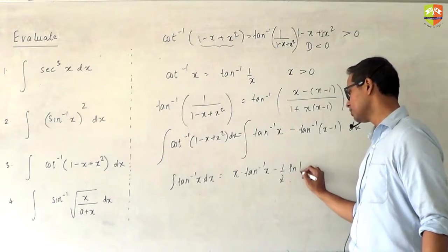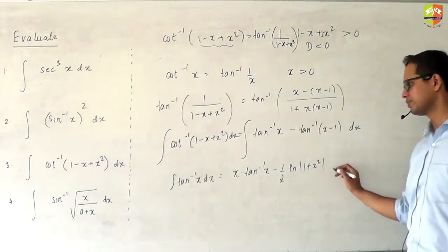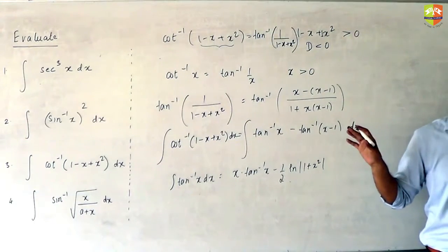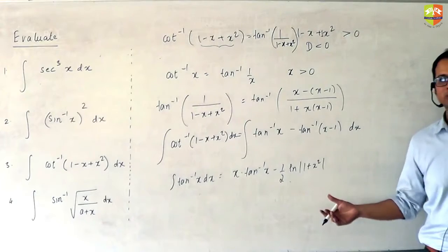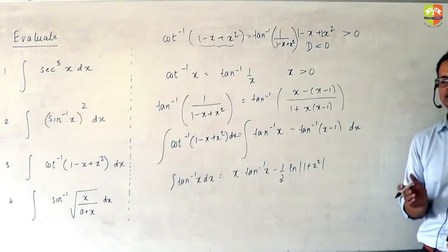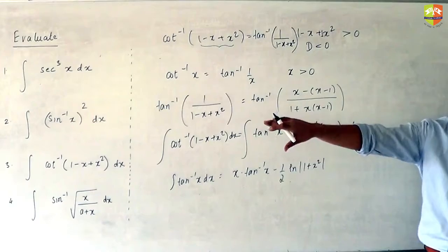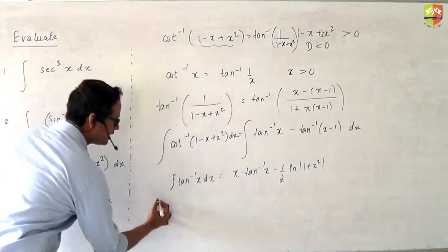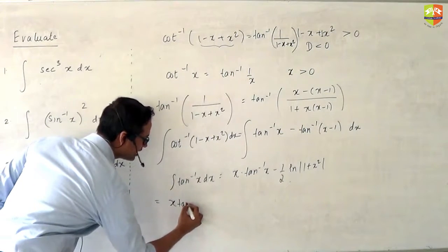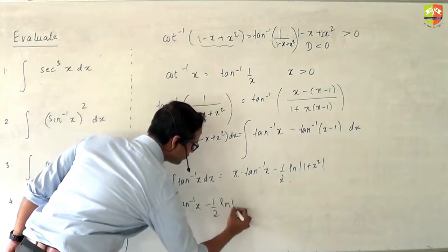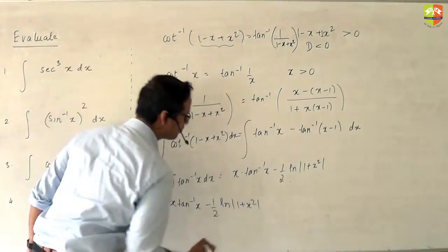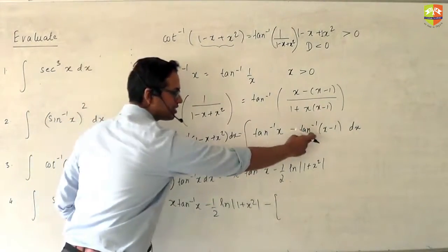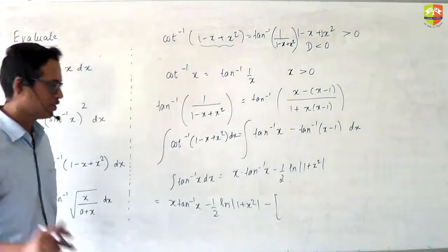We already know the integration of tan⁻¹x. Can somebody tell me what it is? It's x·tan⁻¹x minus half·ln|1 + x²|. Once you know this result, writing the answer becomes a very easy task. It just becomes x·tan⁻¹x minus (1/2)·ln(1 + x²).